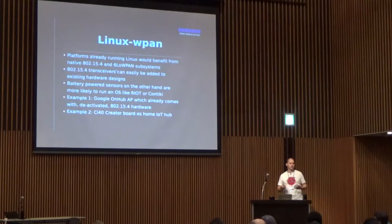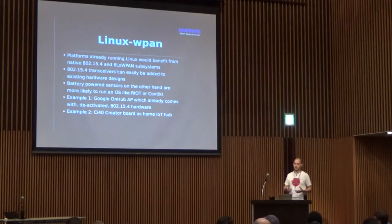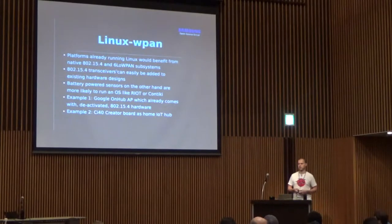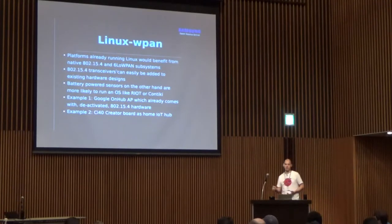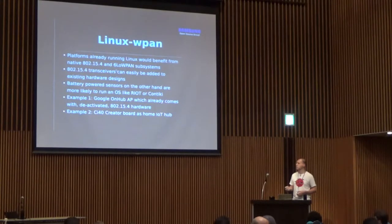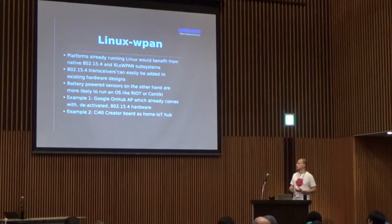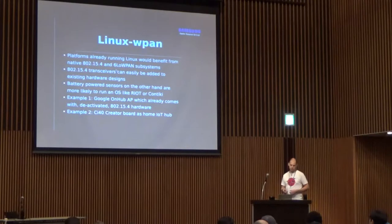So why do we actually want to do this? Small sensors aren't something you'd run Linux on — or even can run Linux on. But you need some device to connect these sensors to the wider internet — a border router scenario. That's where Linux comes in. There's a lot of existing hardware in home environments running Linux in router form factors, and you can easily add a 15.4 wireless transceiver because all it needs is an SPI port and some GPIO lines for IRQ handling — very easy to add to an existing hardware design.